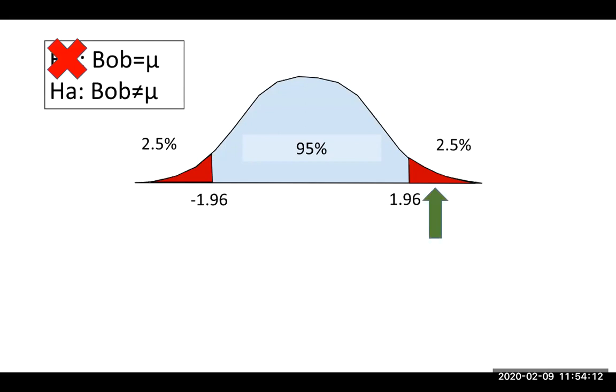Remember, we always assume the null hypothesis to be true. So I'm going to make all of my decisions about the null. And so in this case, if we find that Bob's score is in the red zone, I'm going to cross off the null hypothesis. And then my formal decision is that I reject the null.